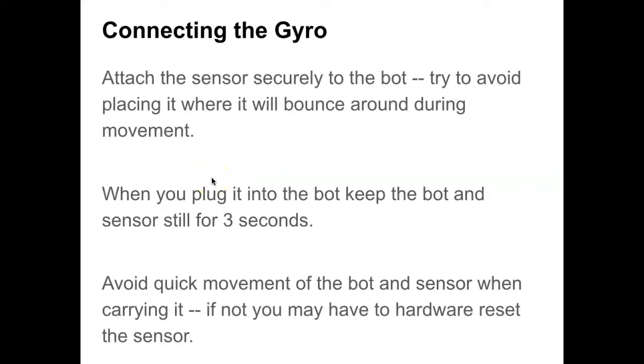Some tips to make things successful: when you attach the sensor to the bot, make sure it's secure. Try to avoid putting it on the edge or right above a wheel where it's going to bounce around during movement. The more shaking it experiences, the more likely it is to give weird sensor readings. When you plug it into the robot, keep the bot and sensor still for at least three seconds. Try to avoid quick movement when carrying it, or you'll have to do a hardware reset.